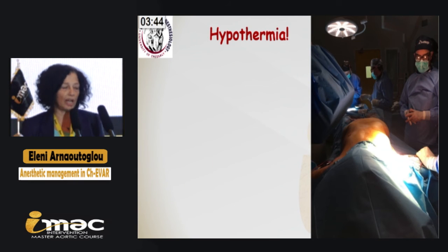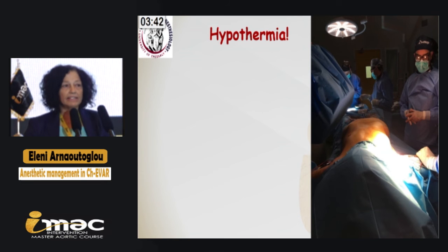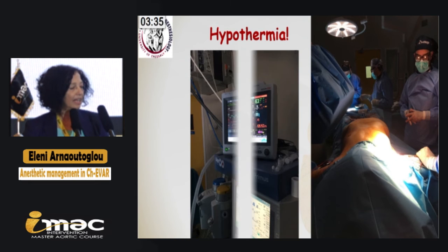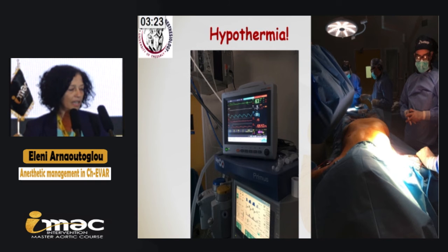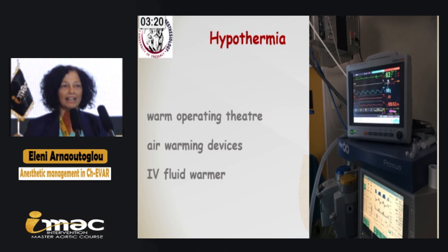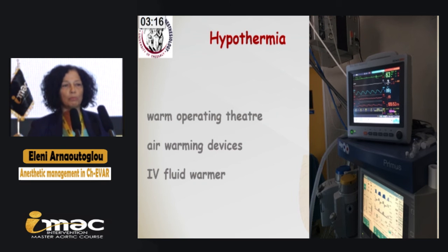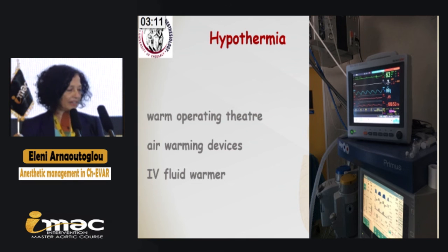Hypothermia is a big issue for us. There is risk of hypothermia due to almost total body exposure to the cold environment, and there is no possibility to place a forced-air warming blanket over the body as it creates problems with image quality. Therefore, there is a need to warm the operating theater to at least 22 degrees Celsius. We use air warming devices between the patient's legs and, of course, intravenous fluid warmers.